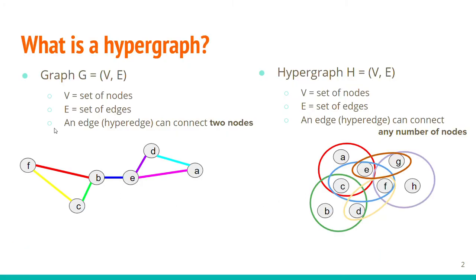So what is a hypergraph? A hypergraph is a generalization of a graph where each edge can connect more than two nodes. For example, in the figure on the right, the red edge can connect A, C, and E.